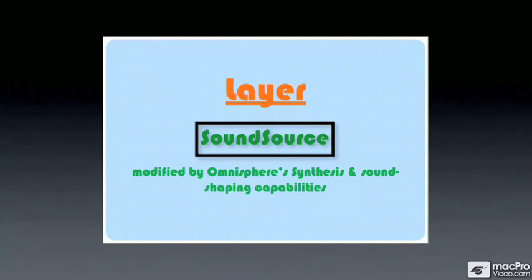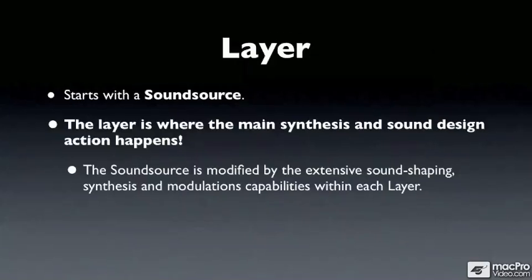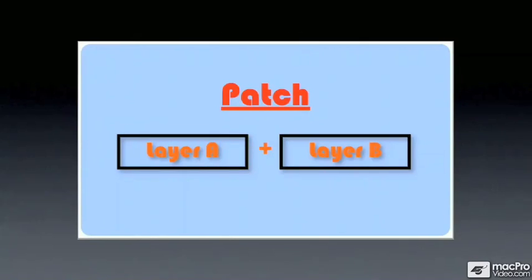We have each layer beginning with a sound source — either synthesized or sampled, but not both. Two layers together are contained within each patch. A patch is a fully realized sound or program in Omnisphere. It can contain one or two layers, and it also contains patch-wide performance controls and parameters as well.